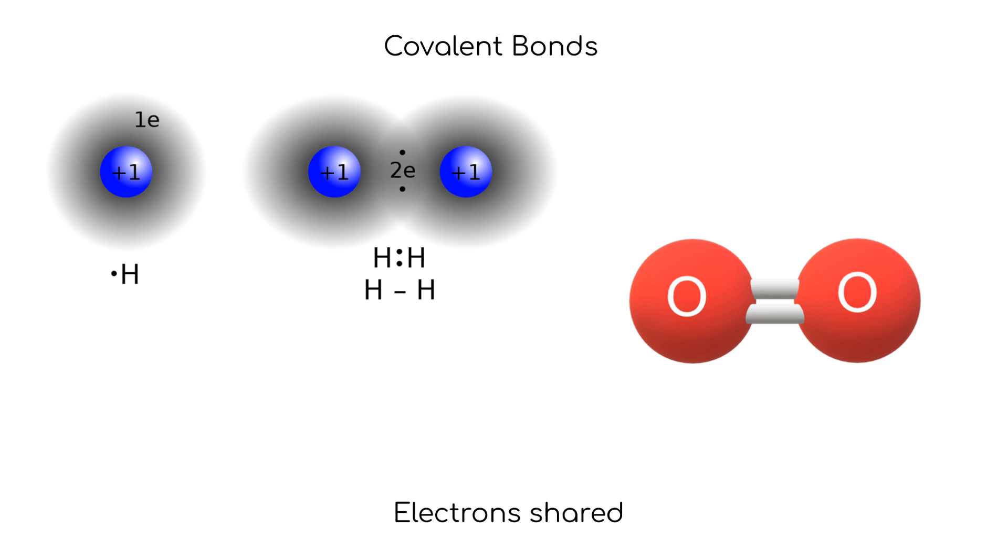In covalent bonds, electrons are shared. The more electrons are shared, the stronger the bond. For example, we can see the shared electrons in H2, which forms a single covalent bond, and O2, which forms a double covalent bond. Covalent bonds are stronger than ionic bonds.